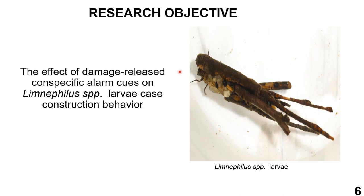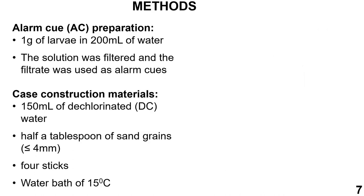The larval species used in this experiment build their cases with sand grains and attach some sticks to the sides of the cases. To prepare the alarm cue, one gram of larvae was crushed in 200 ml of water. The solution was filtered and the filtrate was used as the alarm cue. Case construction materials were provided from the larvae's natural environment: half a tablespoon of sand grains and four sticks per larva, placed in containers containing 150 ml of chlorinated tap water, each held in a water bath at 15°C.